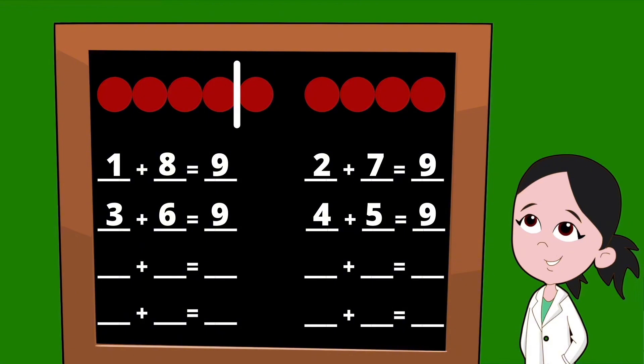Let's slide that line over to the right one dot to find our next set of partners. To the left of our line, we now have — let's count — five dots, so our first partner is the number five. To the right of our line, we now have four dots, so our second partner is the number four. Five plus four equals nine.